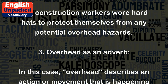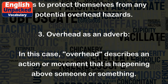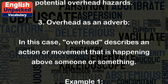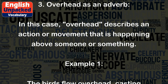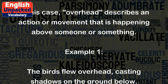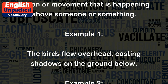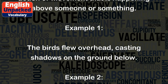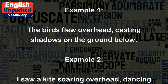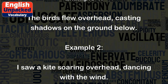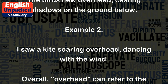3. Overhead as an adverb. In this case, overhead describes an action or movement that is happening above someone or something. Example 1: The birds flew overhead, casting shadows on the ground below. Example 2: I saw a kite soaring overhead, dancing with the wind.